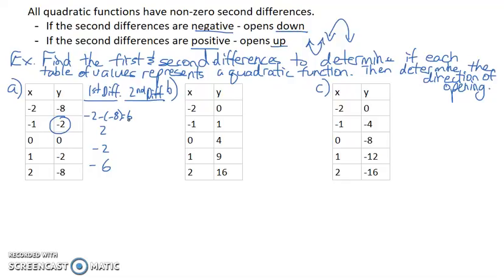So now we go 2 minus 6. Again, taking the later number, subtracting the earlier number. We get negative 4. Negative 2 minus 2 is negative 4. And negative 6 minus 2 is also negative 4. So the second differences are negative 4.